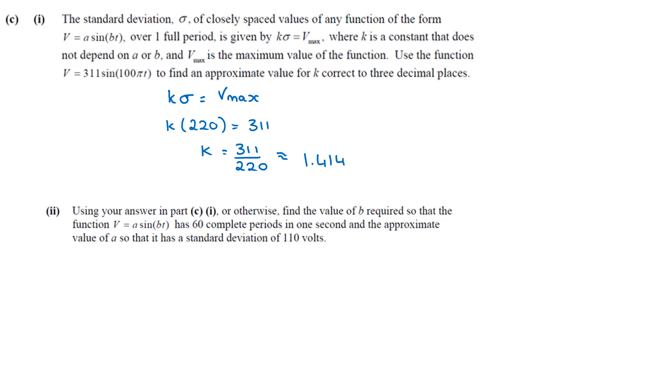So using your answer for CI or otherwise, find the value of B required so that the function V equals A sine BT has 60 complete periods in one second and the approximate value of A where that, so that it has standard deviation of 110 volts. So we have V equals A sine BT and it has 60 periods per second. That means one period takes 1 over 60.